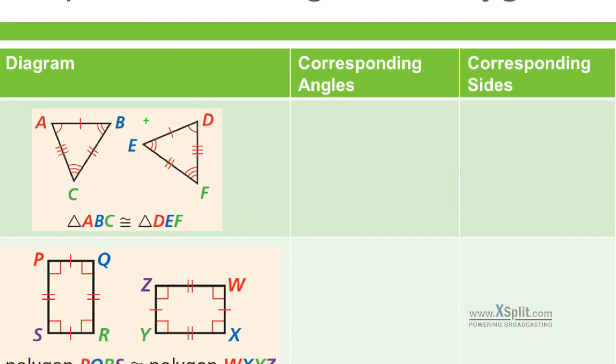Now, if we want to identify some corresponding angles, corresponding sides, I see that A has a single notch and D has a single notch, right? So I'm going to say angle A is congruent, squiggle sign with an equals, to angle D.